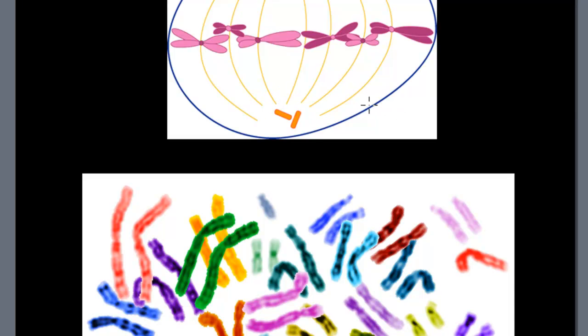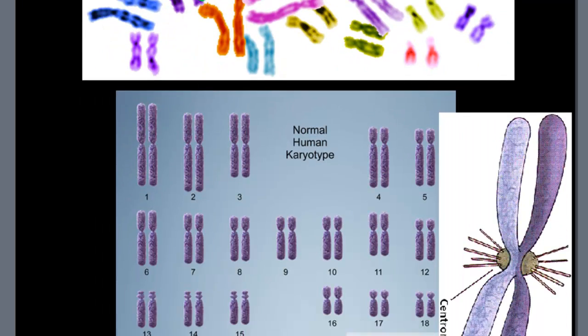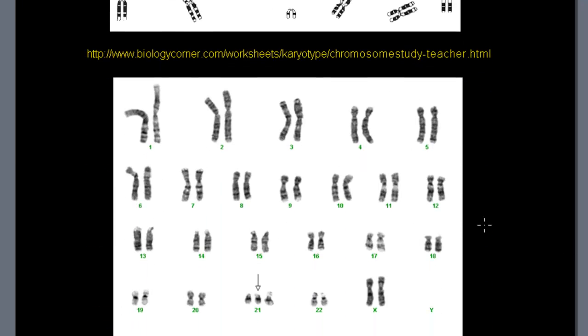And then through sexual reproduction, if this is the male or the female, the spouse or the other partner dumps in their twenty-one, and then all of a sudden now we have a set of three twenty-ones, and that actually gives what is called Down syndrome.